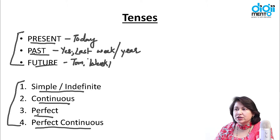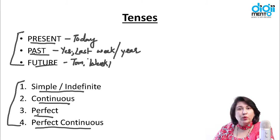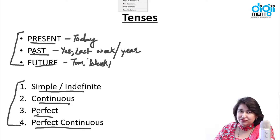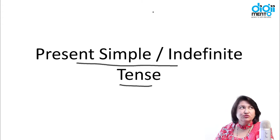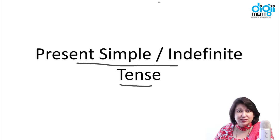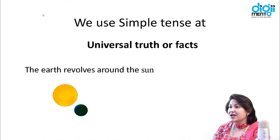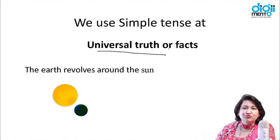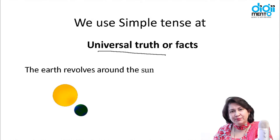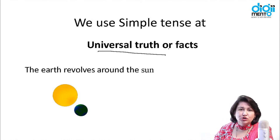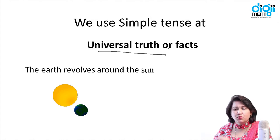Let's start with simple present tense, also called indefinite tense, and look at where we use it — the conditions where we use this kind of tense. First of all, we use simple present tense for universal truths or facts — those facts which remain the same universally across the world, across the globe. They don't change from one place to another.